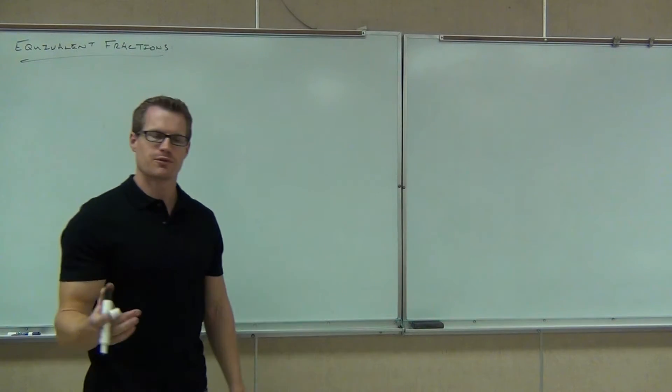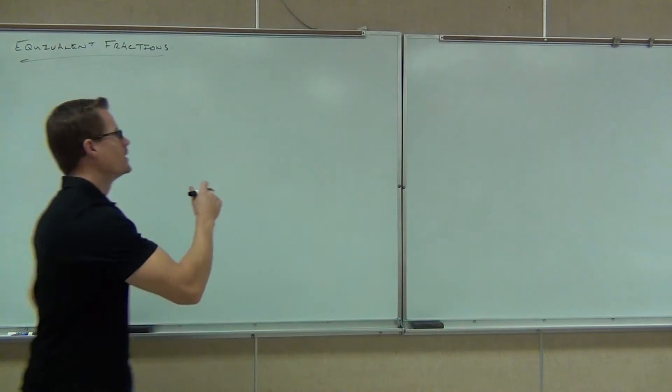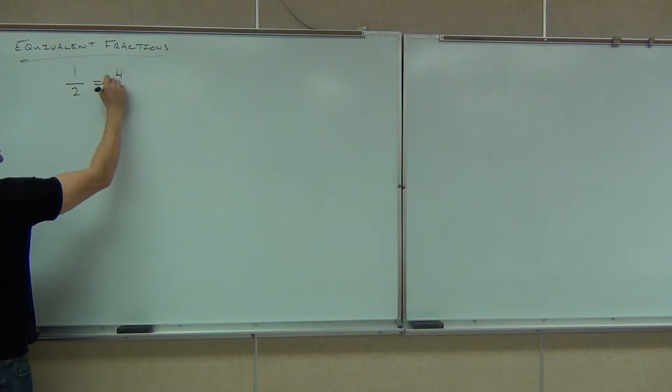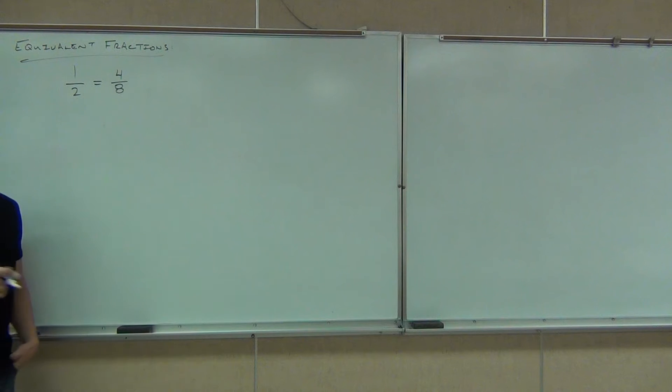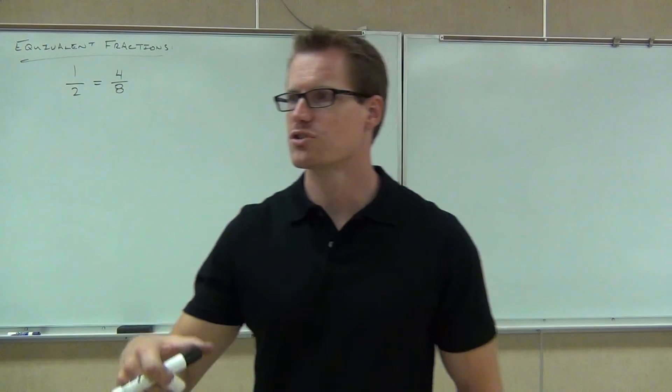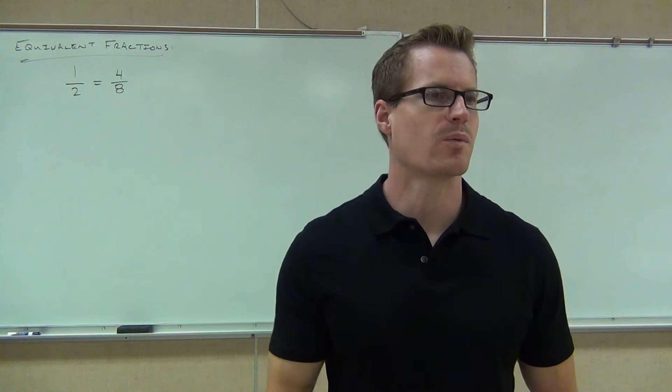Last time we were looking at equivalent fractions, and I gave you this example. I said that 1 half was equivalent to 4 eighths, which meant that they had the same value, they just have different denominators. Are those two fractions in fact equal? Sure, yeah. 1 half and 4 eighths are the same. 1 out of 2 or 4 out of 8 mean the same thing. We're talking about 1 half.